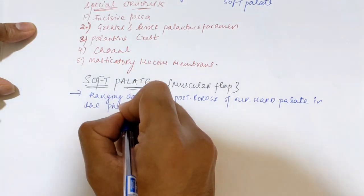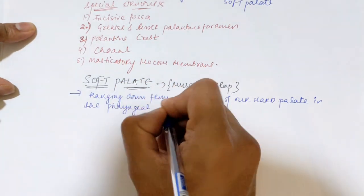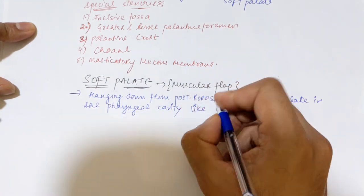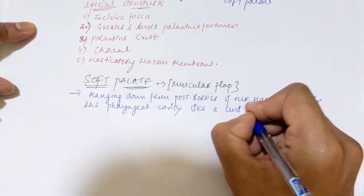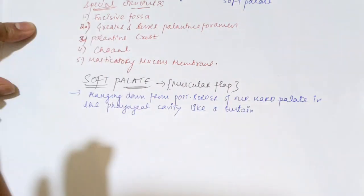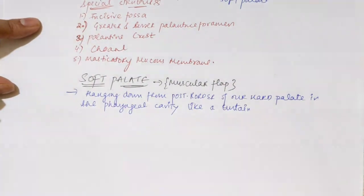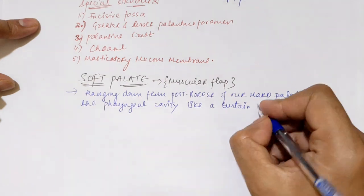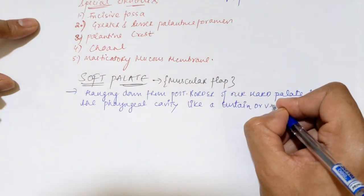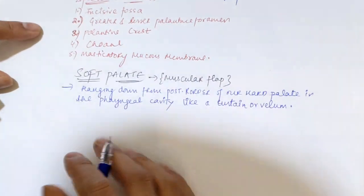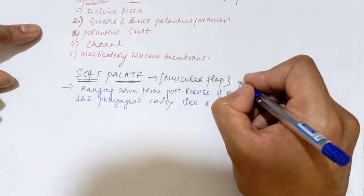It hangs down into the pharyngeal cavity, that is your oropharynx, like a curtain. The soft palate is like a further/curtain in the posterior side of our oral cavity, or like an anterior wall for our oropharynx — the pharyngeal cavity. In Latin we call it a 'velum'.